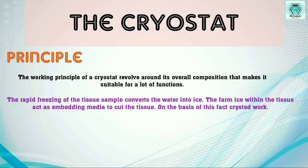The working principle of a cryostat revolves around its overall composition, which makes it suitable for a lot of functions. This kind of rapid freezing of the tissue sample converts the water into ice. The firm ice within the tissue acts as the embedding media to cut the tissue, and on this basis the cryostat actually works.